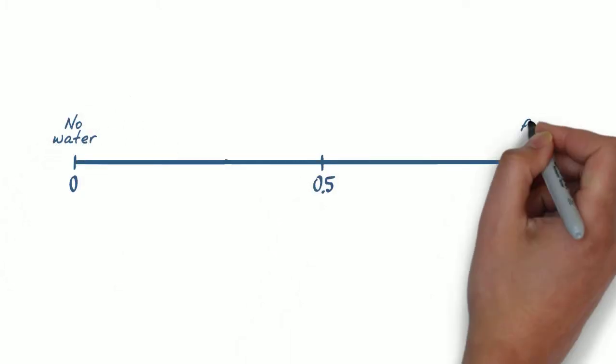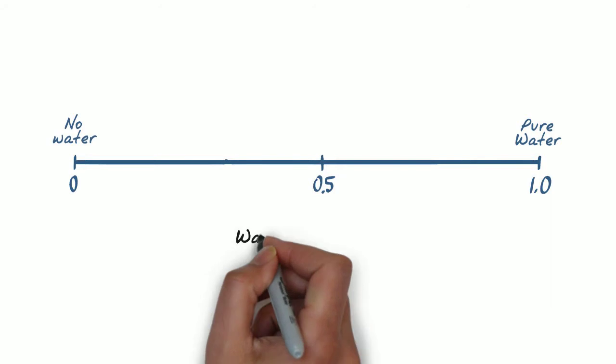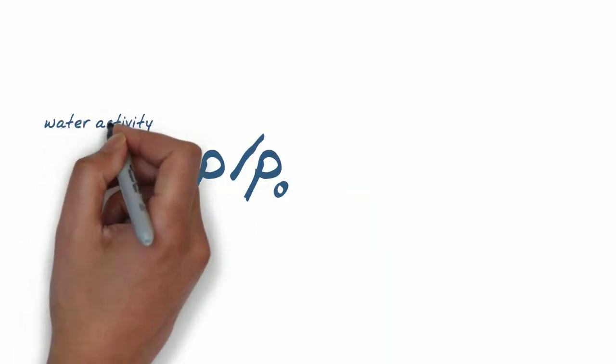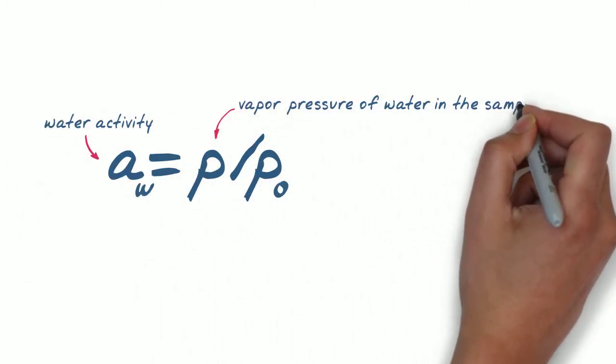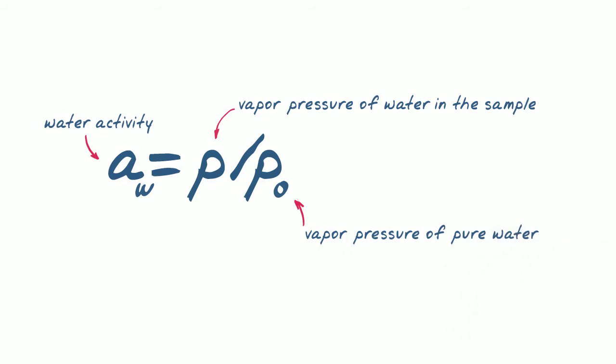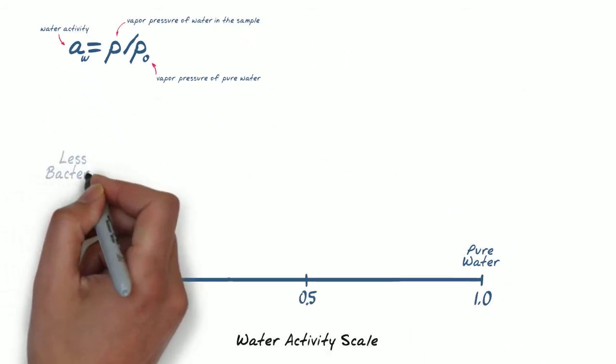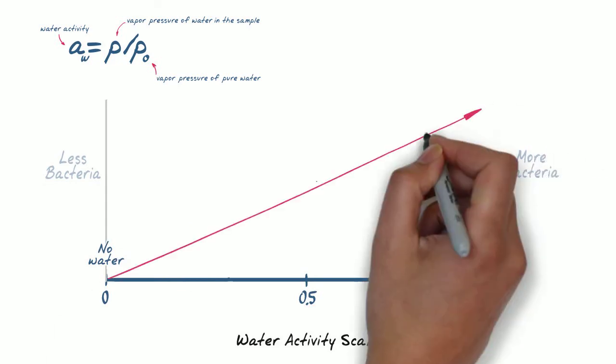Water activity is based on a scale of 0 to 1.0, with pure water having a value of 1.00. It is defined as the vapor pressure of water over a sample divided by the vapor pressure of pure water at the same temperature. In other words, the more unbound water we have, the more likelihood we have of microbial spoilage.